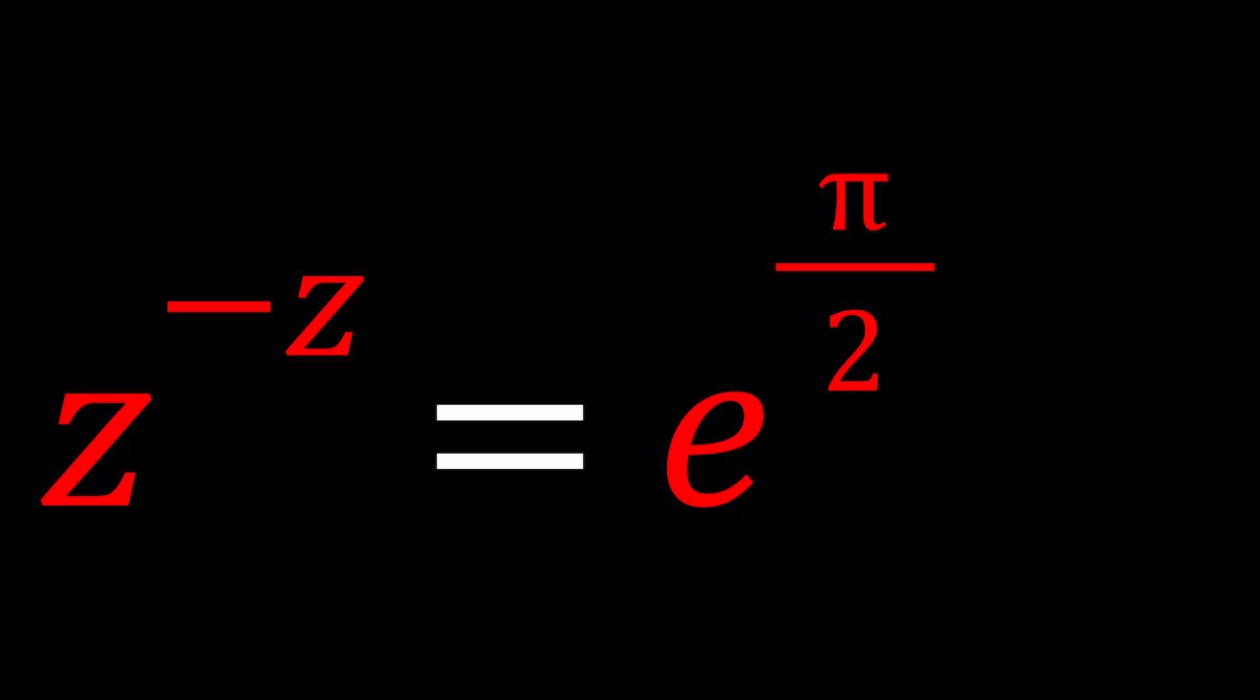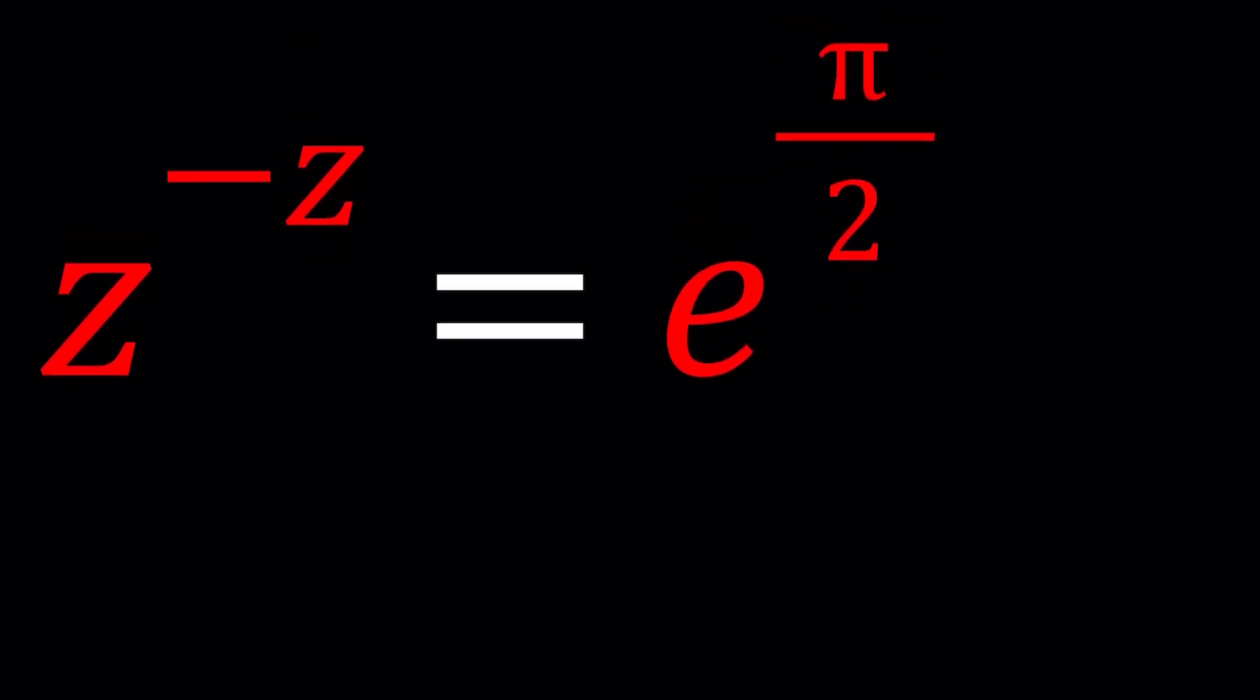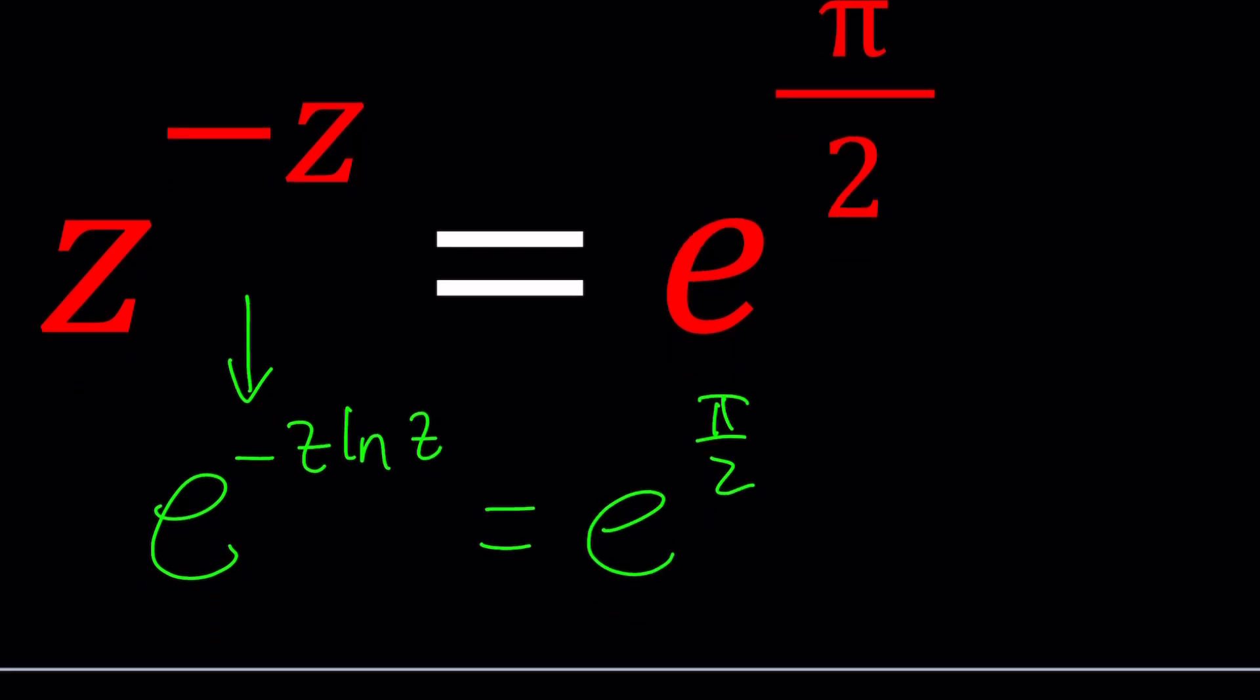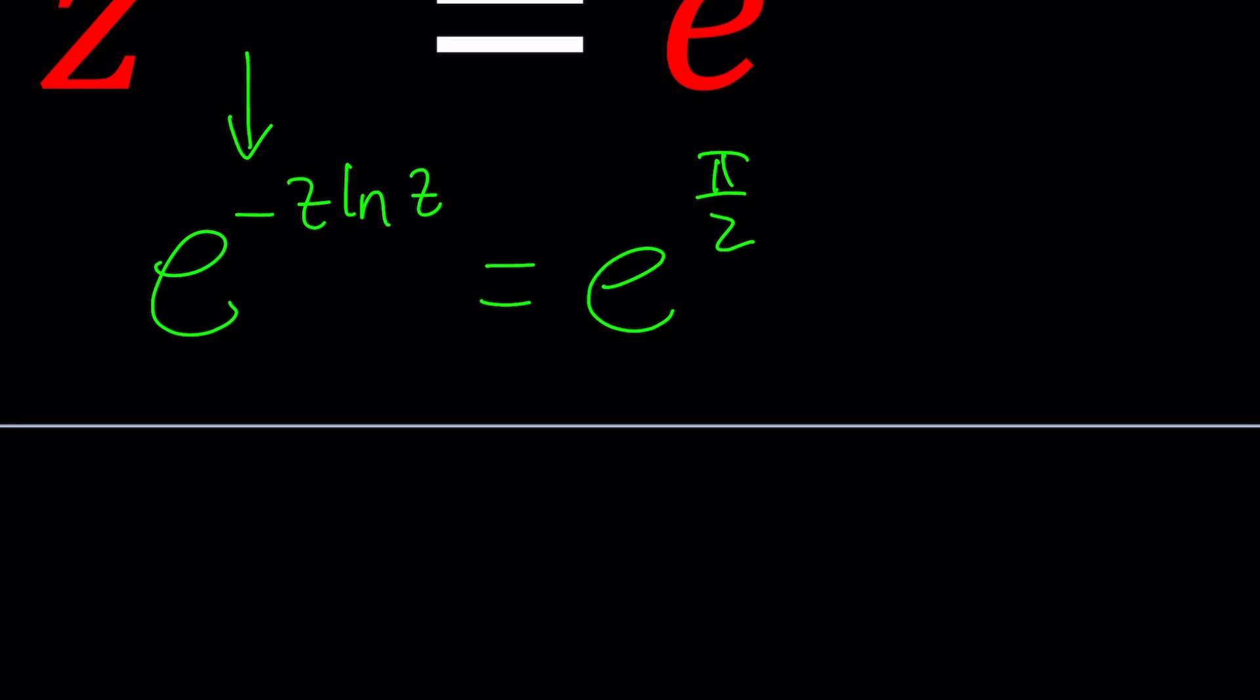Let's go ahead and use natural log on both sides because if I do that, then I can basically get rid of the z as the base. Of course, you can also use the complex exponentiation and write this as e to the power negative z ln z, which is also going to be helpful. It's pretty much equivalent to natural logging both sides. Let's go ahead and use this instead. Now we have an equality. Therefore, we can basically write this as follows: negative z ln z equals pi over 2.